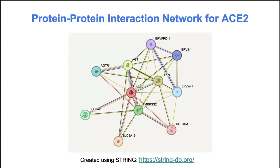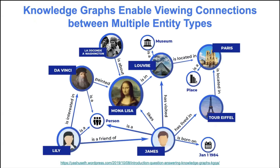We also have a more biological example. Here is a protein-protein interaction network for ACE2. I'm not sure if people are familiar with STRING DB, but this is a great resource for viewing protein-protein interactions. You can just type your gene there and it will give you a network from different evidence sources.